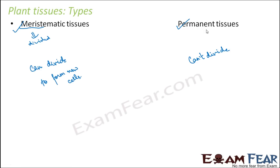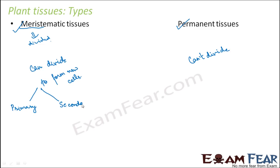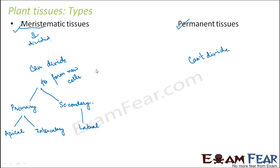Meristematic tissues are of two types: primary meristematic tissue and secondary meristematic tissue. Primary meristematic tissue is further divided into apical meristematic tissue and intercalary meristematic tissue. Under secondary meristematic tissue comes the lateral meristem.